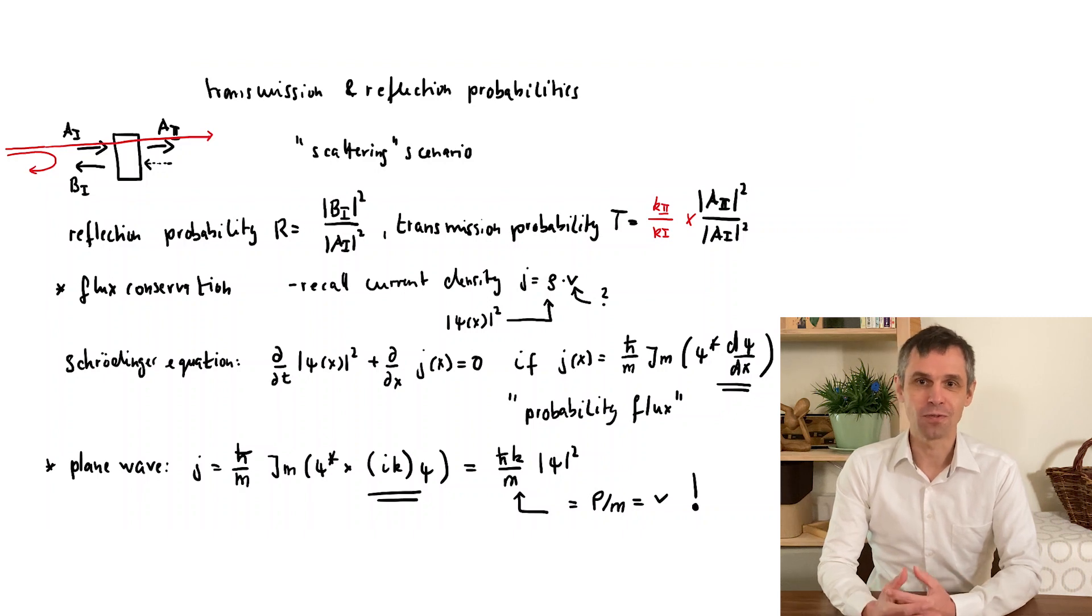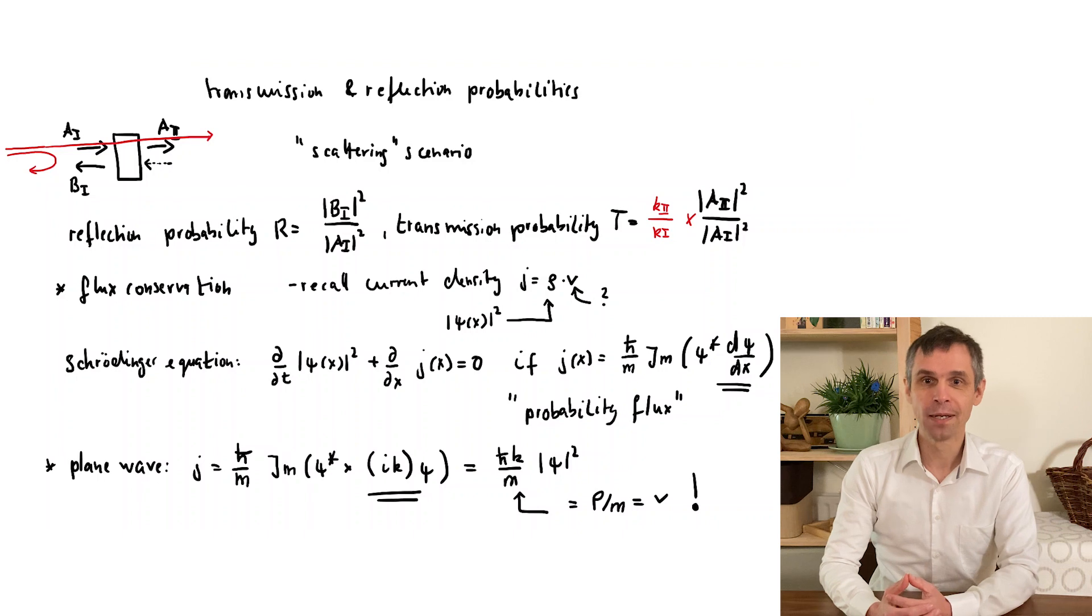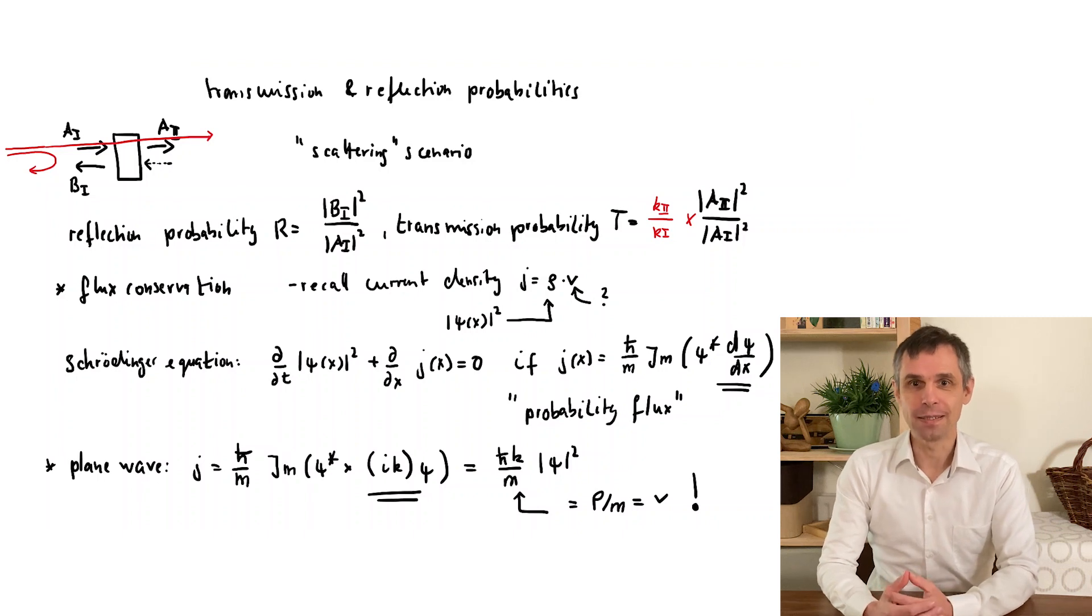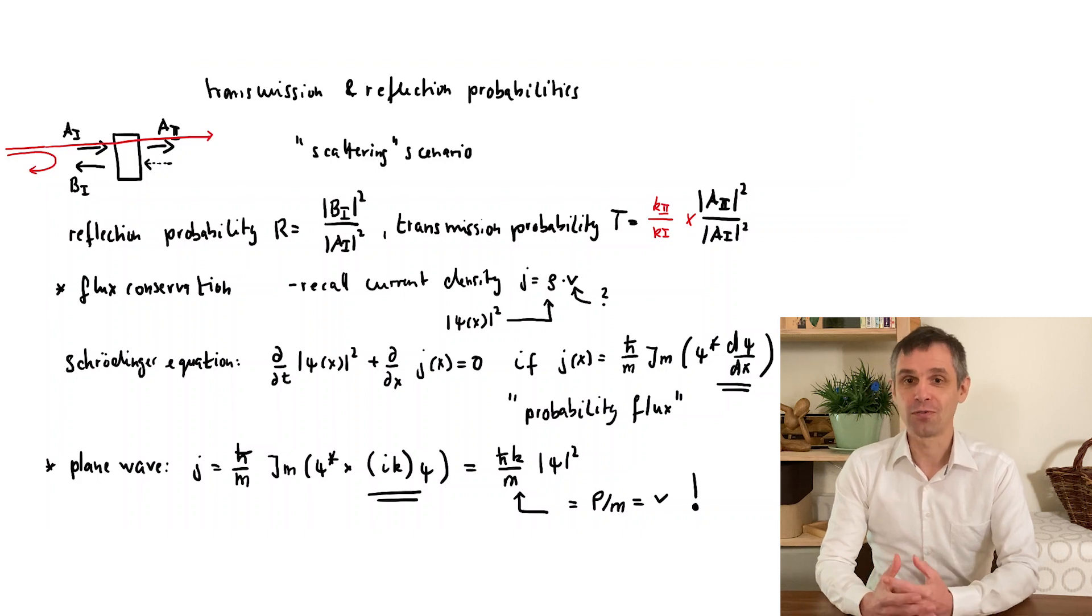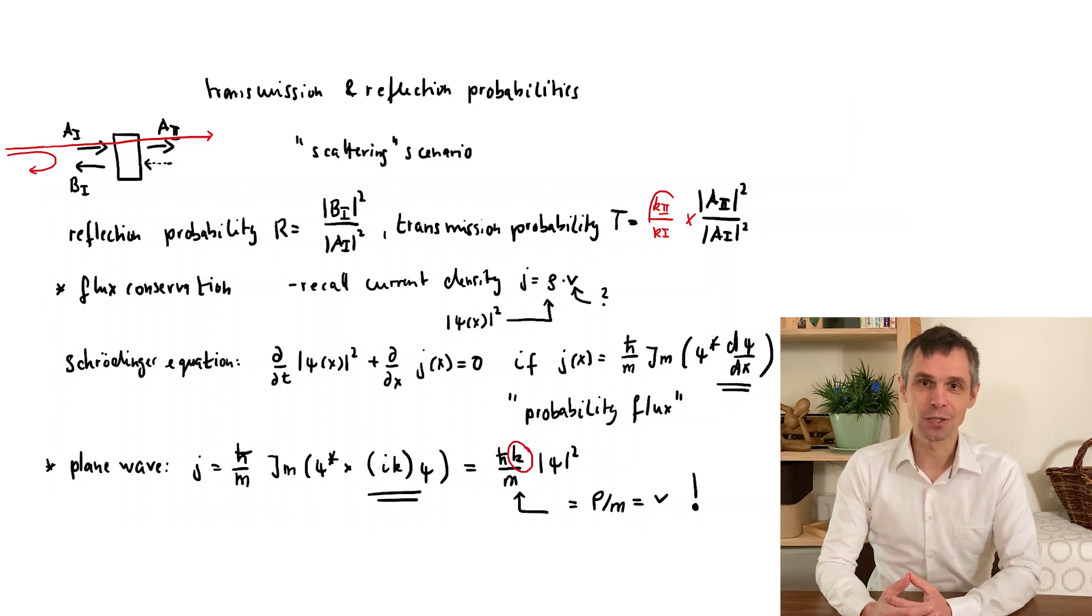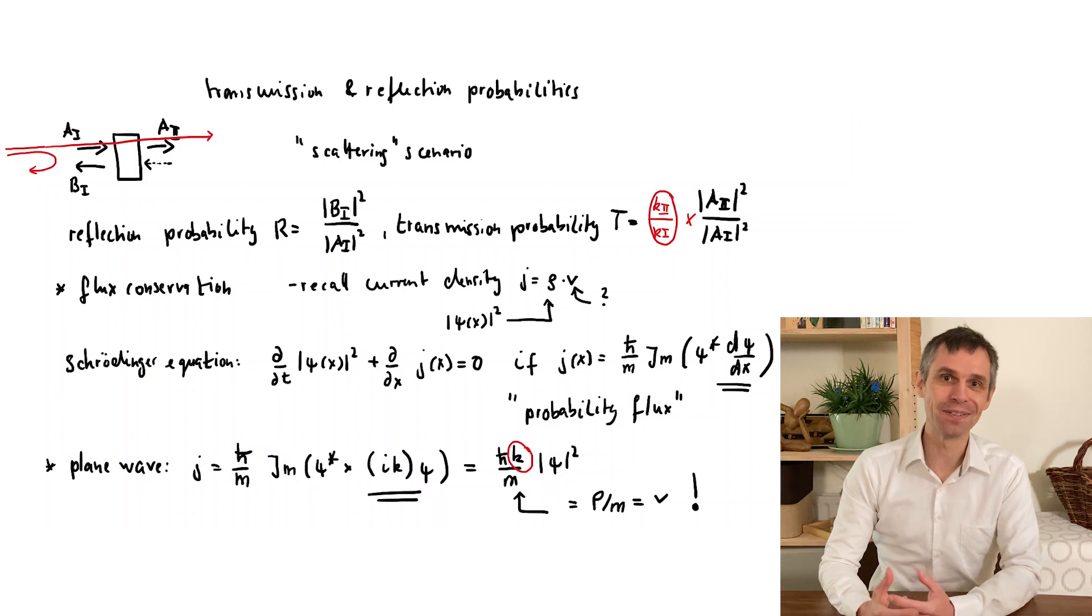And in our examples, this does not really matter for the reflection, because there we look at two wave components in the same region, which travel with the same velocity, just into opposite directions. But for transmission, this extra factor here appears, which really just accounts for the difference between these velocities.